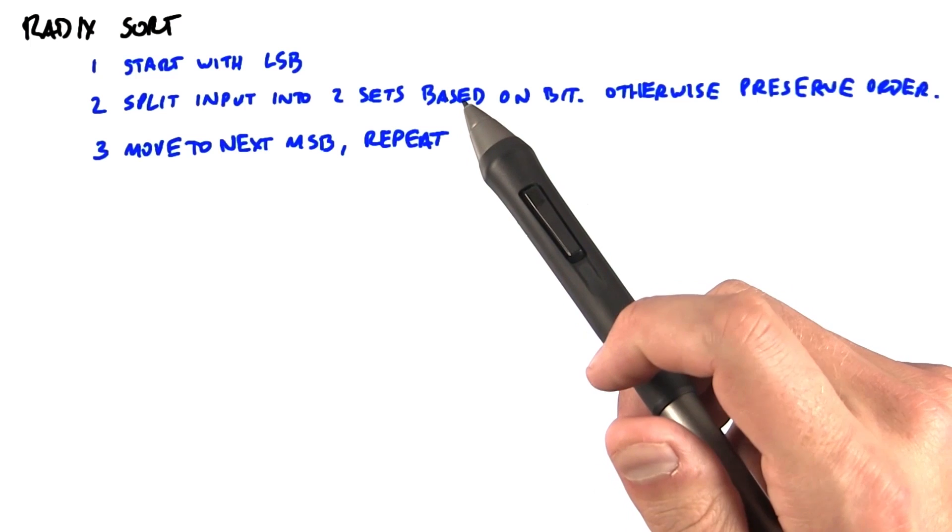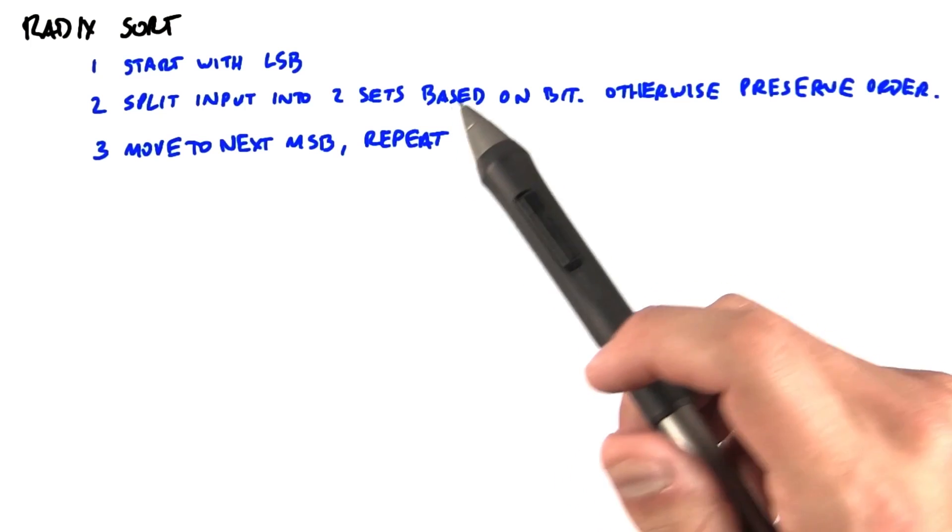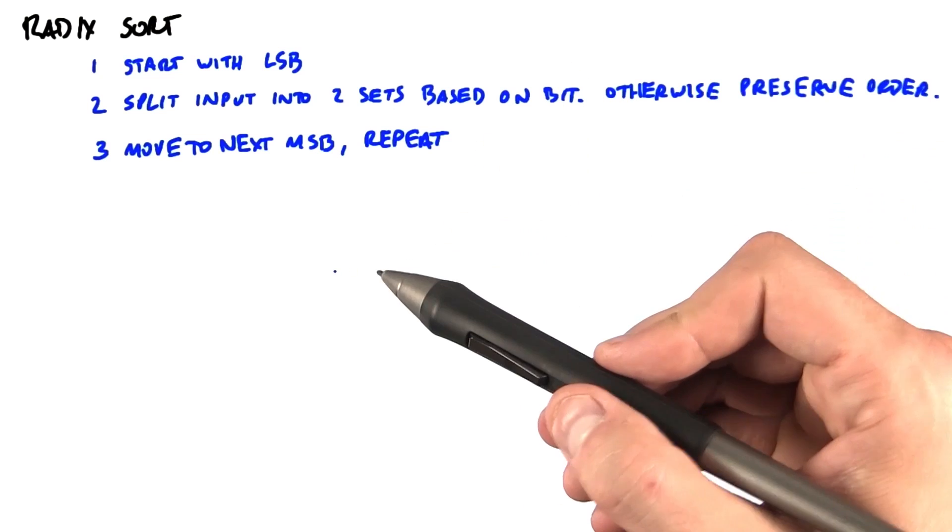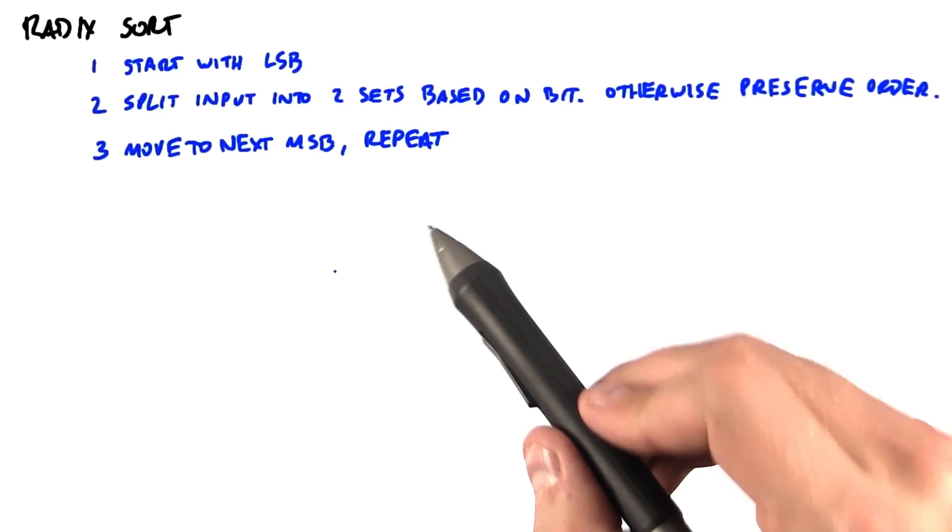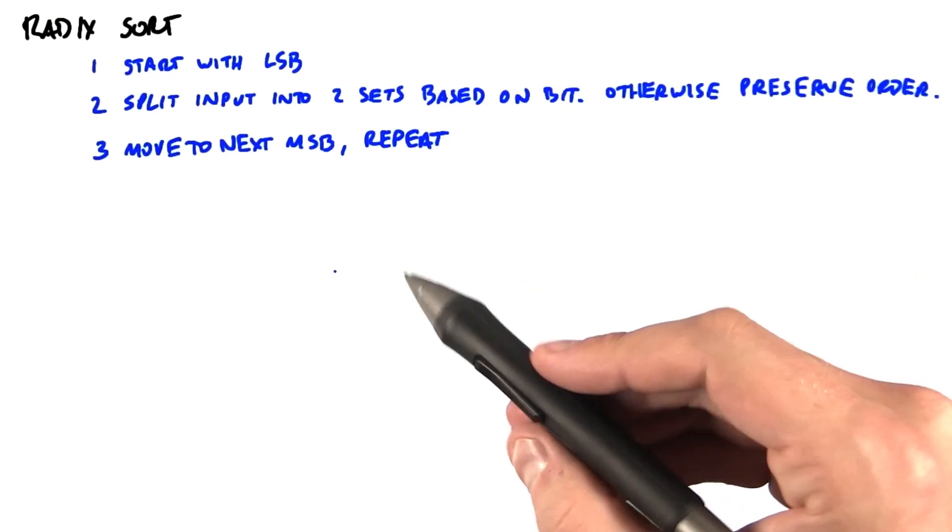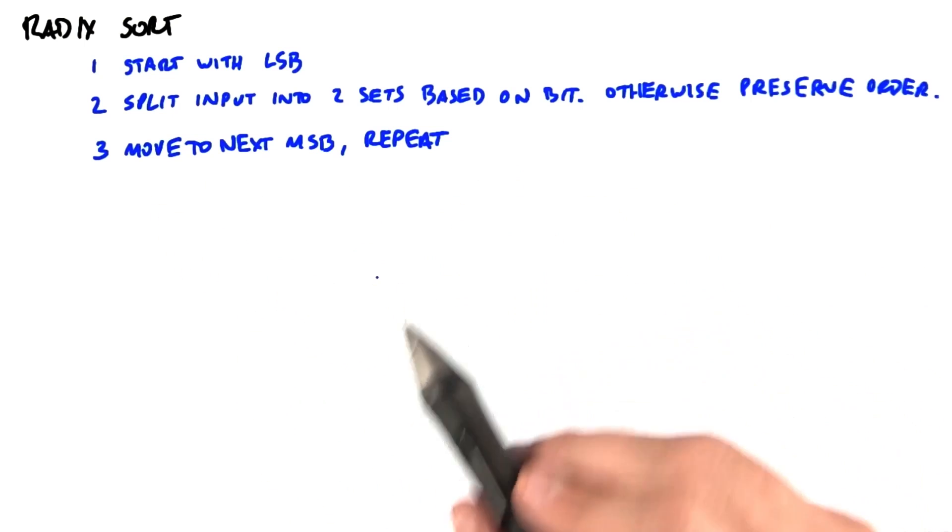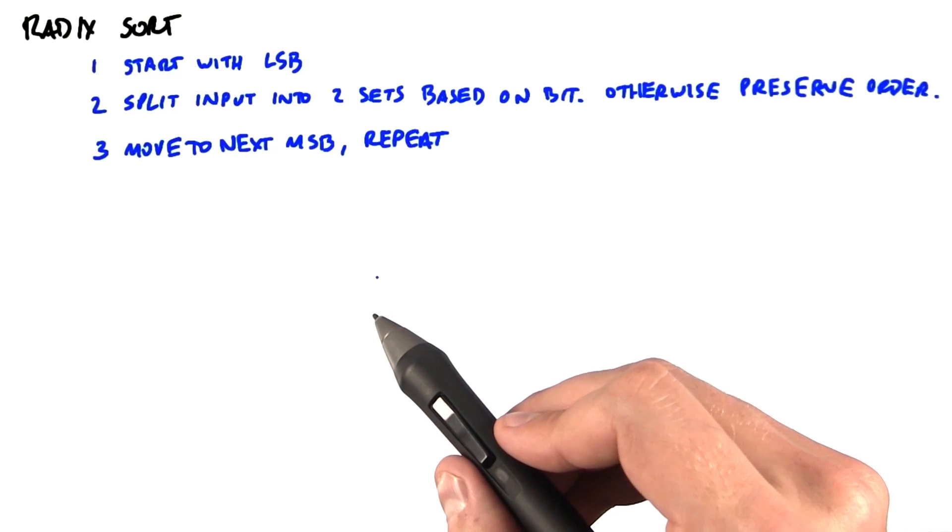Now, all of the previous sorting algorithms were comparison sorts, meaning the only operation we did on an item was compare it to another one. Radix sort relies on a number representation that uses positional notation. In this case, bits are more significant as we move further left in the word, and it's most easily explained using integers.